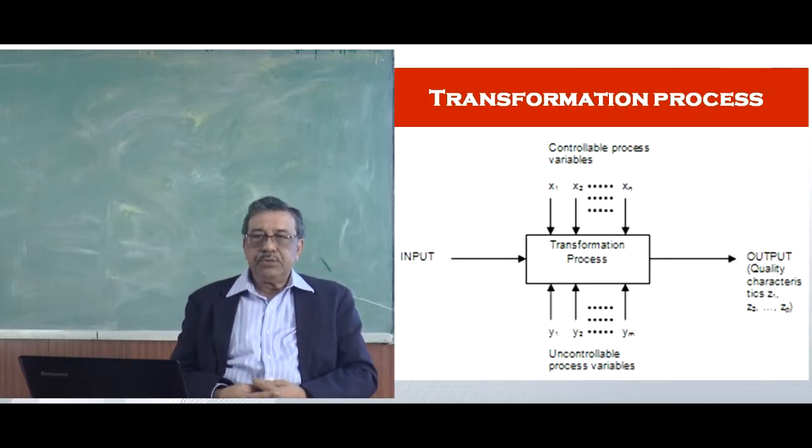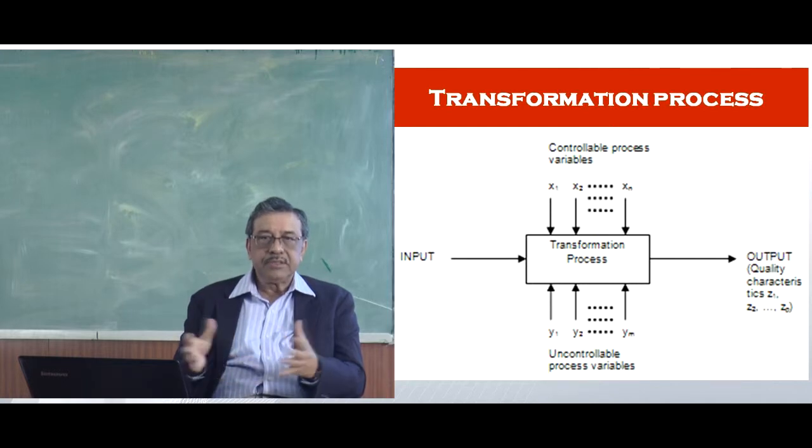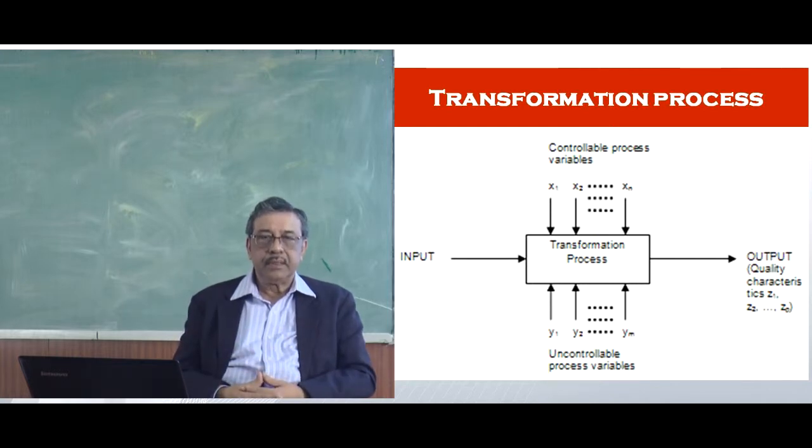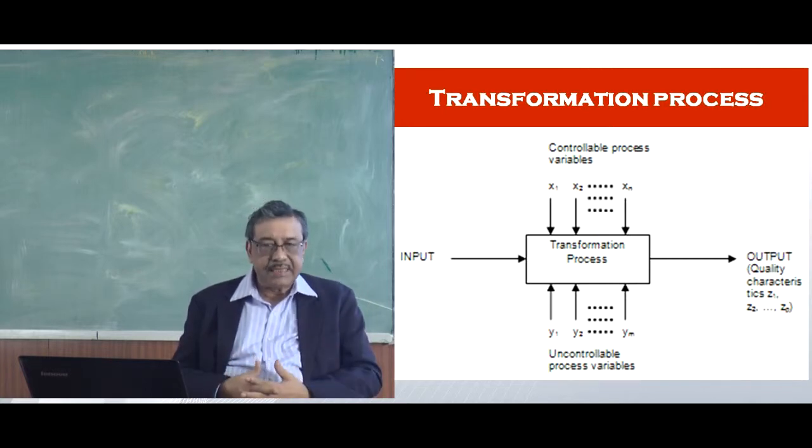This is a slide which I used in my previous lectures before but nevertheless I will just talk about it just to make this topic a little more complete. In any production or in a process situation, in a manufacturing process mainly we see that there is an input coming in and there is a transformation process that is happening and then finally you have the output. In the transformation process you have some controllable variables.